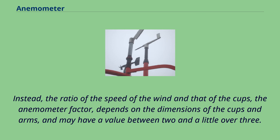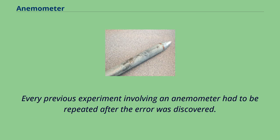Instead, the ratio of the speed of the wind and that of the cups, the anemometer factor, depends on the dimensions of the cups and arms, and may have a value between two and a little over three. Every previous experiment involving an anemometer had to be repeated after the error was discovered.